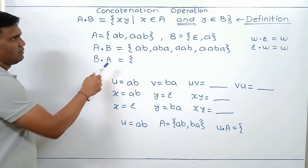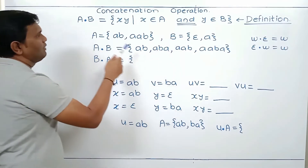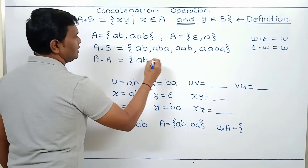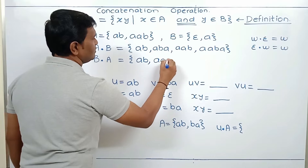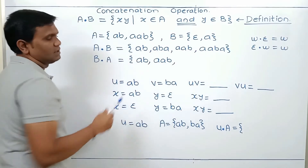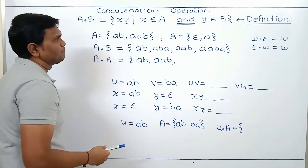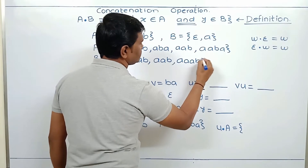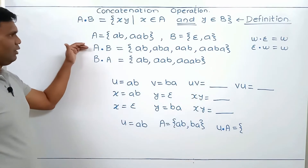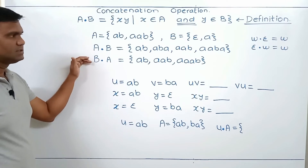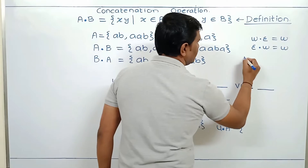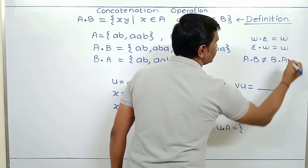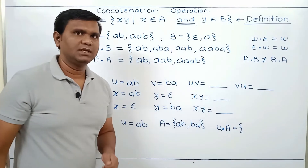When we calculate B·A, we take X from B and Y from A. So ε·AB = AB, ε·AAB = AAB, A·AB = AAB (repeated), and A·AAB = AAAB. So A·B contains four strings and B·A contains three strings. Therefore A·B is not equal to B·A — in this case, concatenation is not commutative.